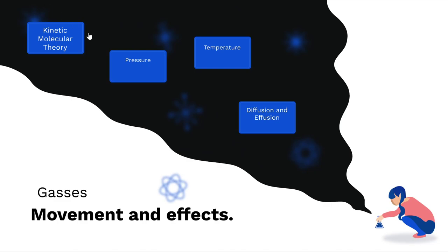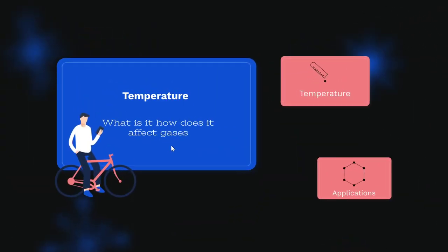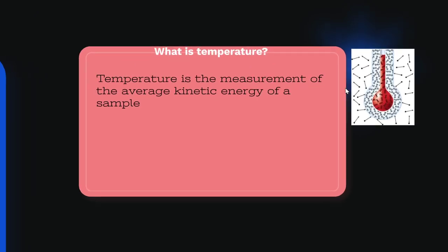Next, we're going to talk about temperature — both defining what it is and how it affects different gases. You know that temperature is how hot something is, but what it actually is is a measurement of the average kinetic energy of a sample. So temperature is actually just an energy measurement. What's happening when you take your temperature is that the thermometer is reacting to the molecules in your body hitting the thermometer at a certain rate of speed, and that rate of speed changes the temperature reading.